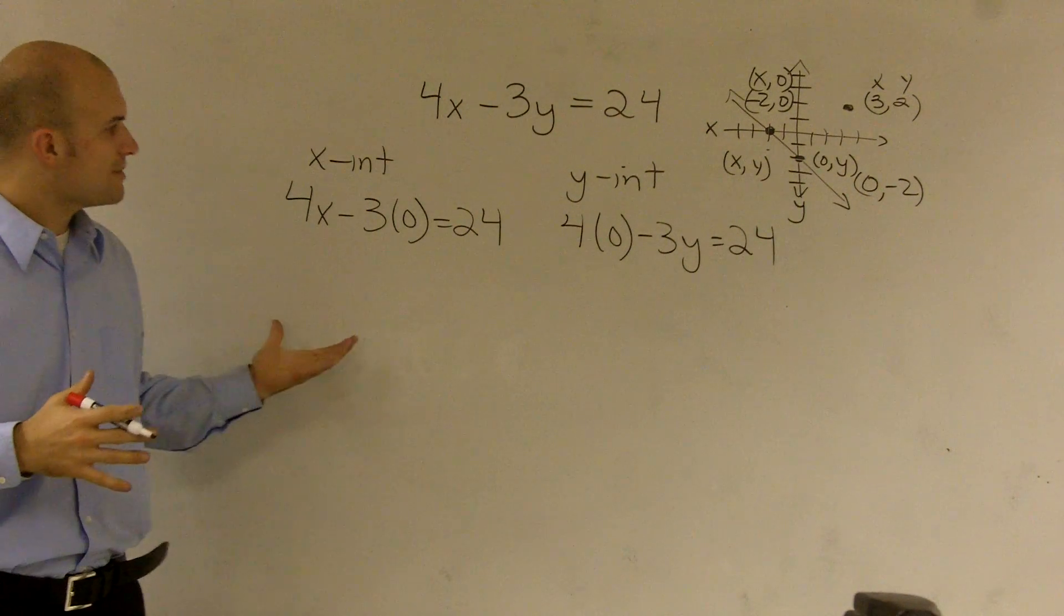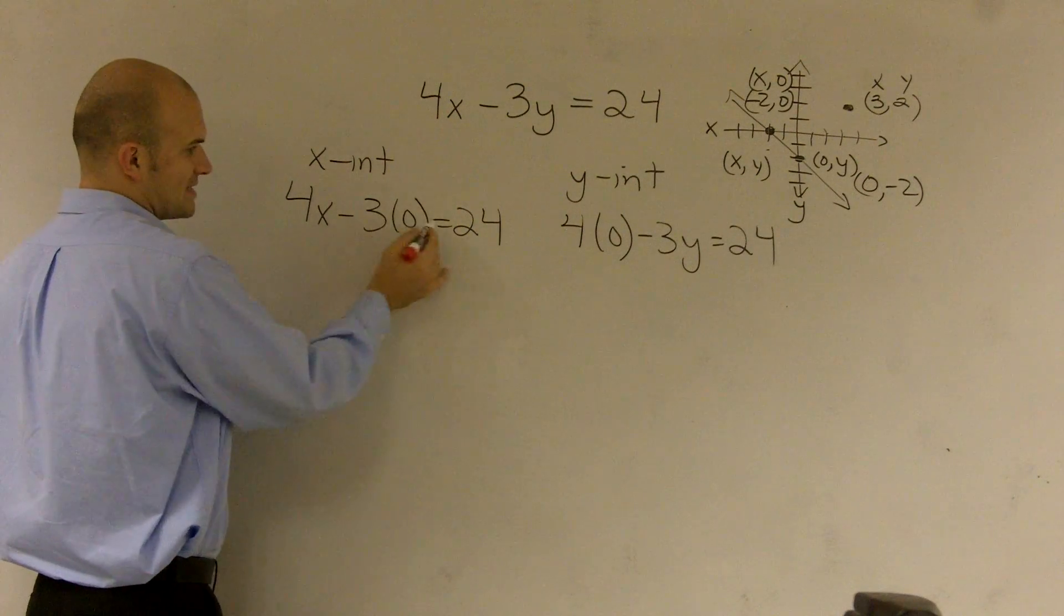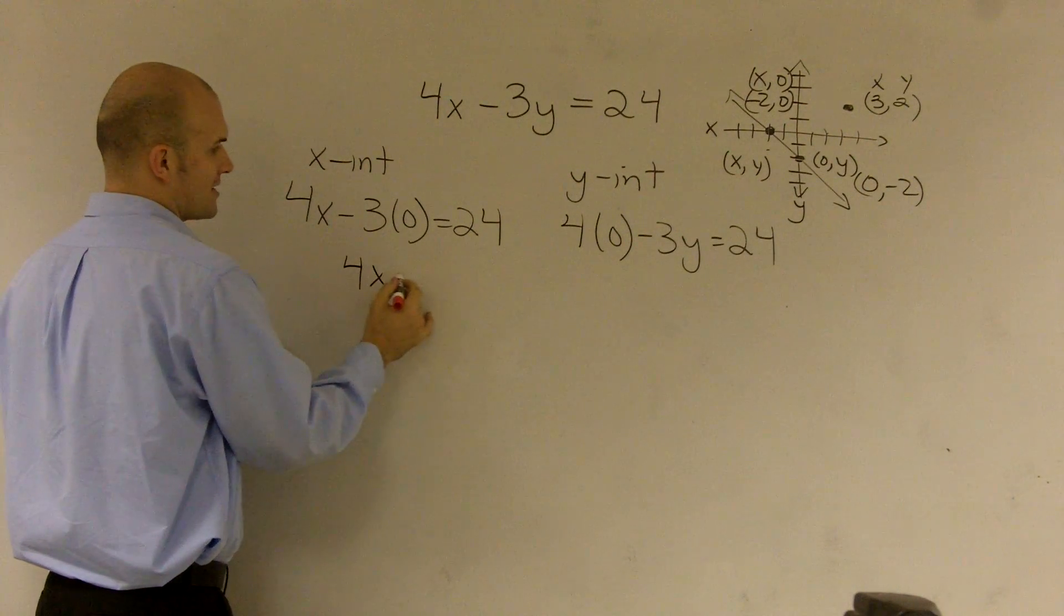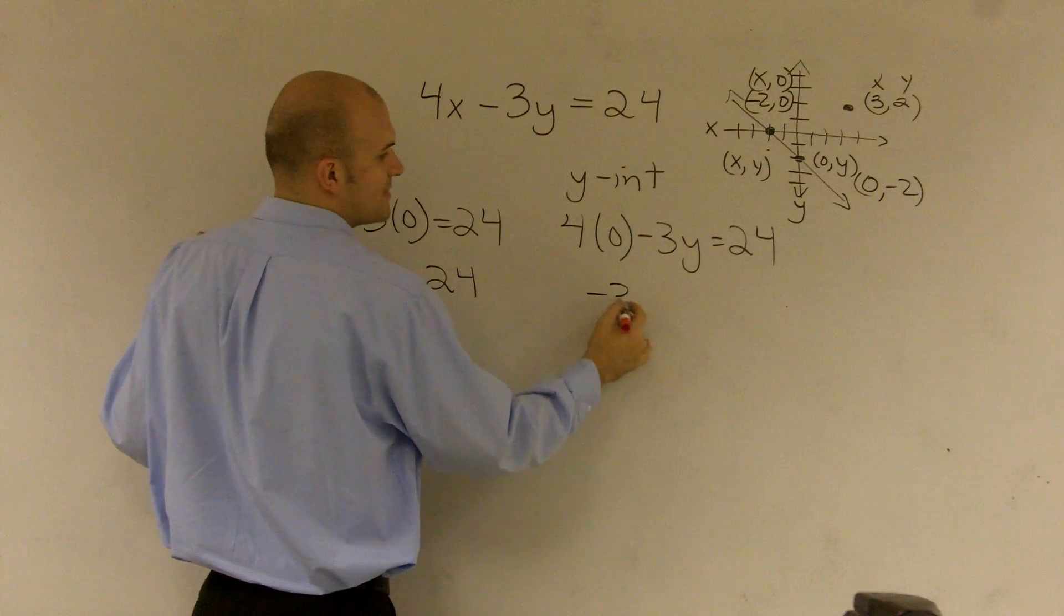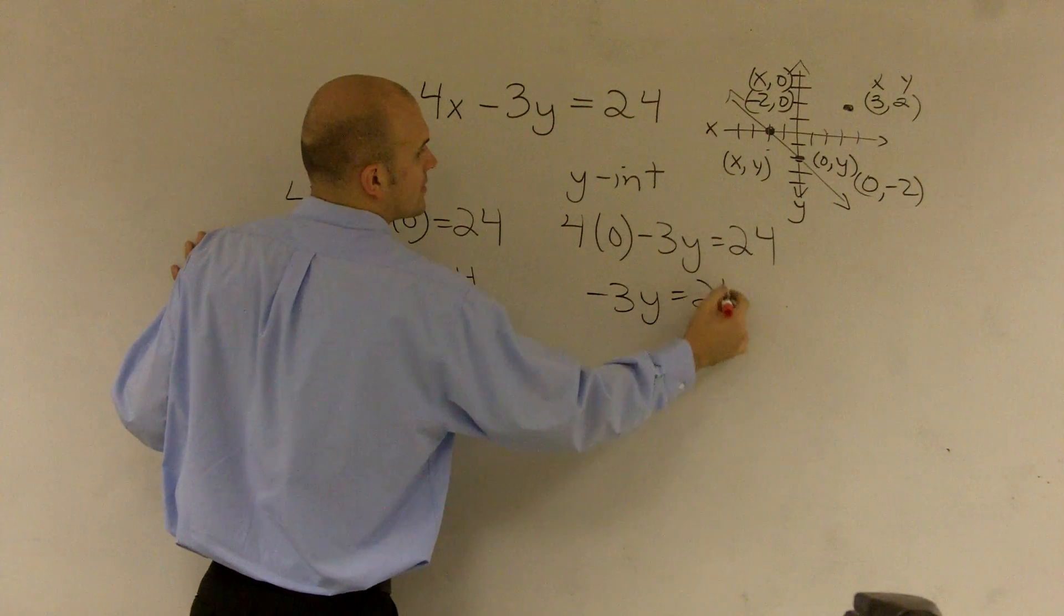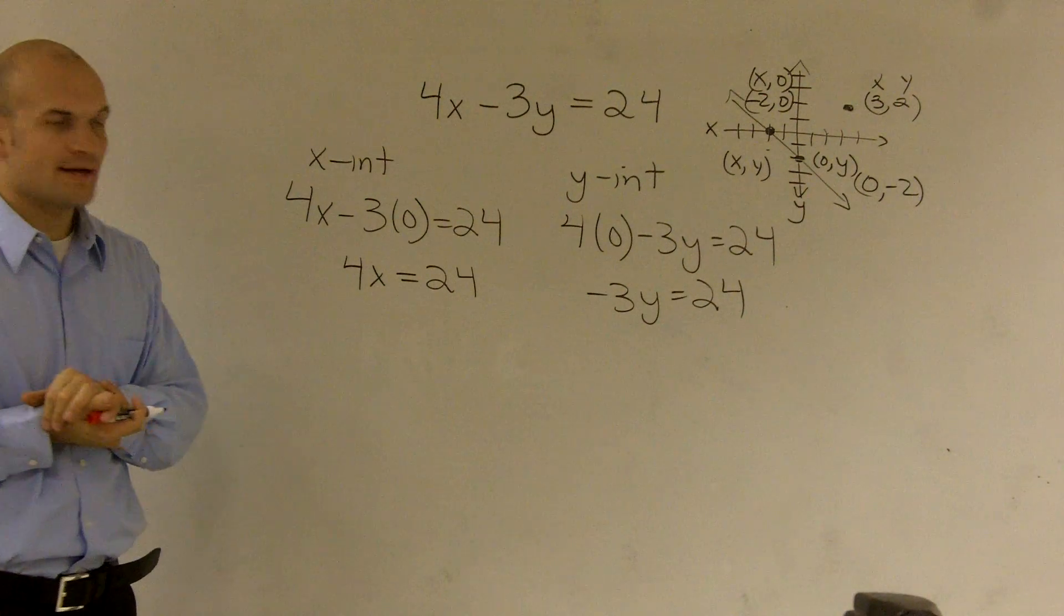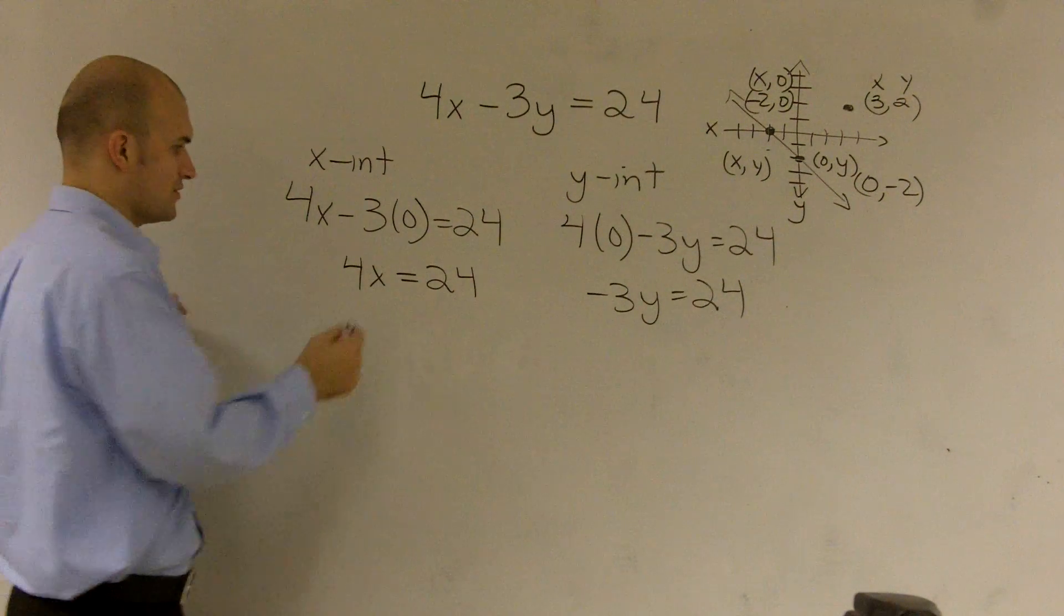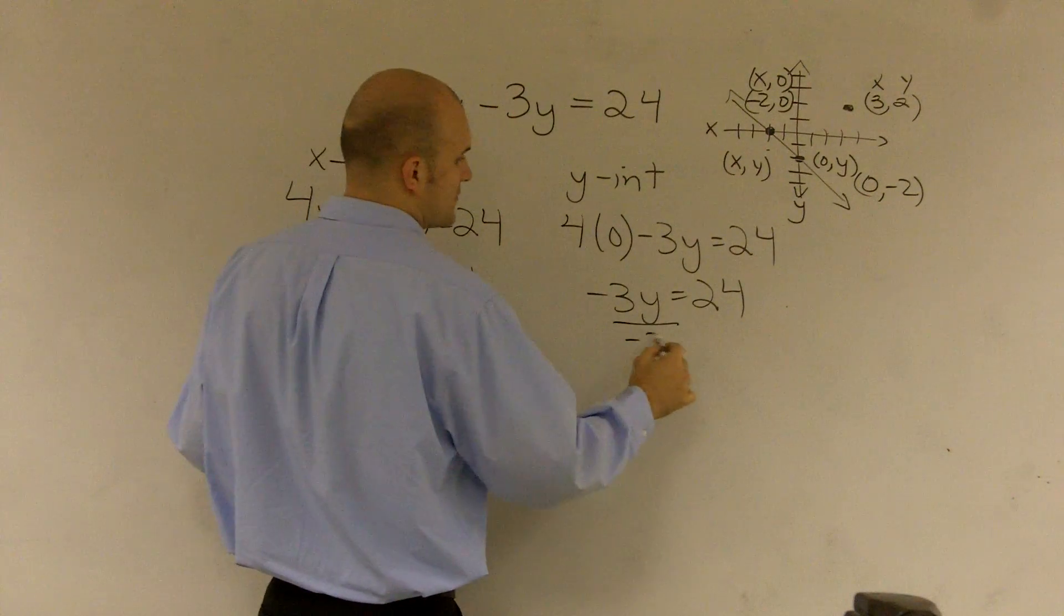So then from here, all I really need to do is solve each equation. Well, 3 times 0 is obviously 0. So I have 4x equals 24. Here, 4 times 0 is 0. I have negative 3y equals 24. So then, the last thing I need to do is solve both of these. I divide by 4, divide by negative 3.